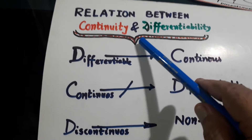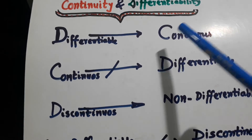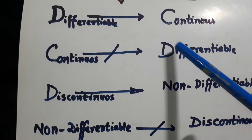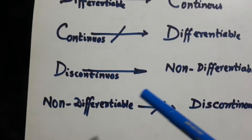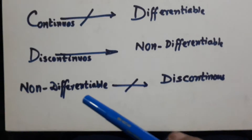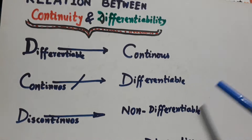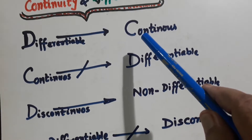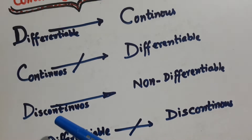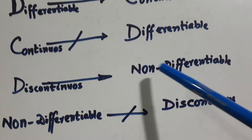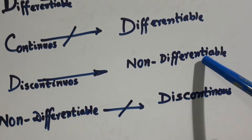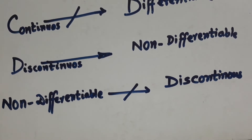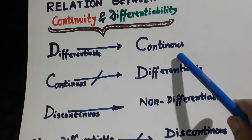Relation between continuity and differentiability: differentiable means continuous. But continuous does not necessarily mean differentiable. Not continuous means not differentiable. Discontinuous means not differentiable. Not differentiable means discontinuous. D to C is okay, but C to D is not okay. When the curve is discontinuous, we cannot differentiate it. When we cannot differentiate it, it is not continuous. These are the relations between continuity and differentiability.